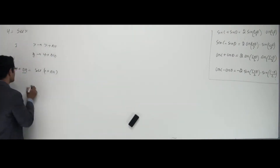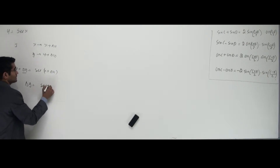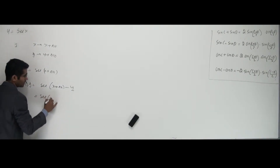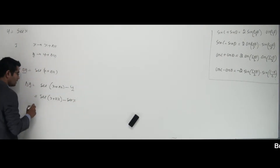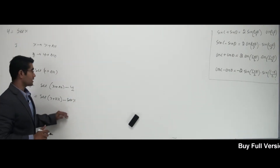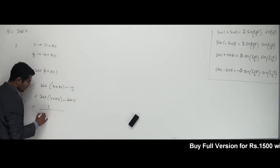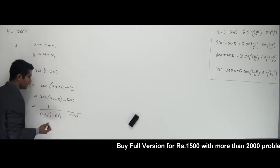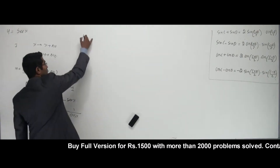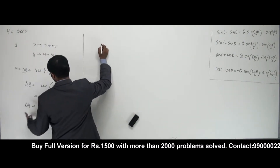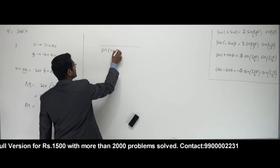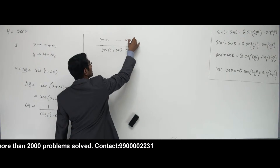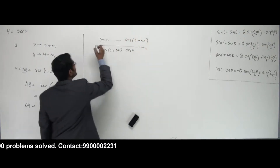I'm looking for y on the left-hand side always — that's the first stage of the problem. That is: delta y equals secant of x plus delta x minus y. And who is y? That goes as secant of x plus delta x minus secant x. Now I don't have any formula connected to secant, but I can write secant as 1 over cos. So that becomes 1 over cos(x + delta x) minus 1 over cos x. I can take the LCM since we have fractions, giving us cos x minus cos(x + delta x) over cos(x + delta x) times cos x. So that is delta y.